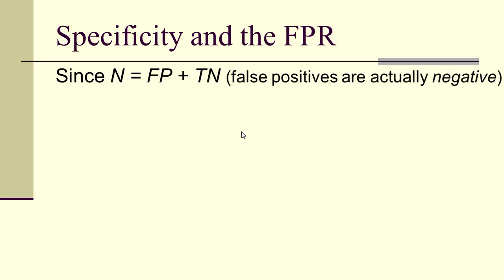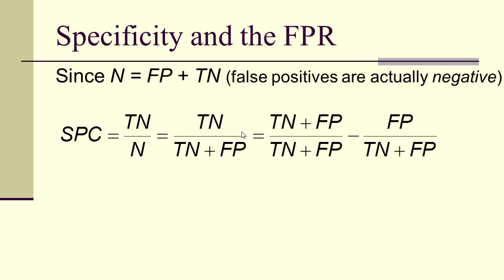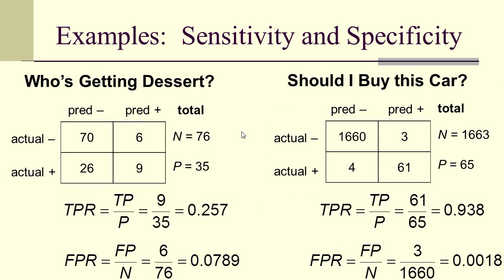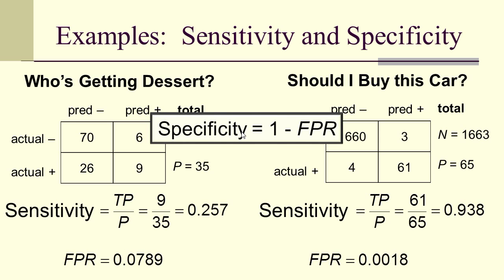A prediction of positive is a highly reliable result when specificity is high. Specificity and the false positive rate are related: since capital N equals FP plus TN, the specificity SPC equals TN over N, which equals TN over TN plus FP. This simplifies to 1 minus FP over N, or 1 minus the false positive rate. Therefore, the false positive rate is 1 minus the specificity — this relationship will be very important, especially in the third lecture. So the sensitivity is just the true positive rate, and the specificity is 1 minus the false positive rate.